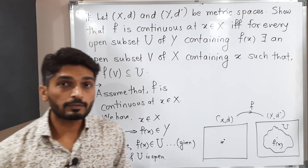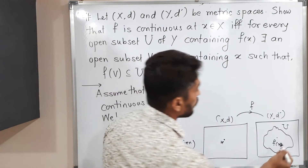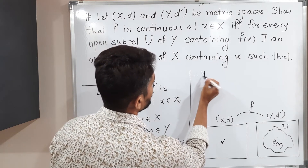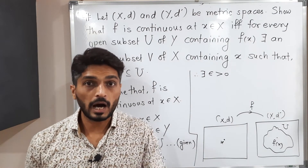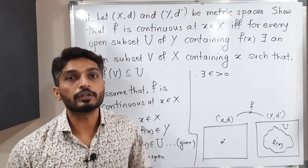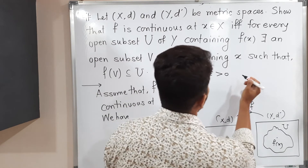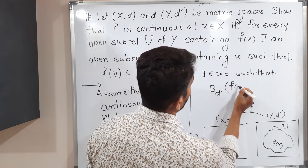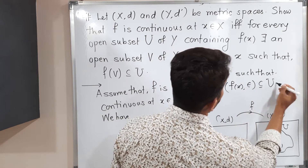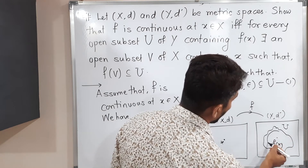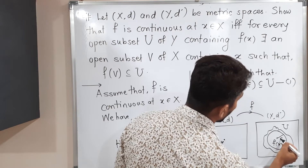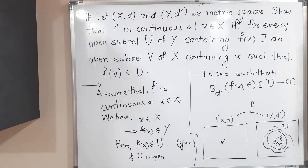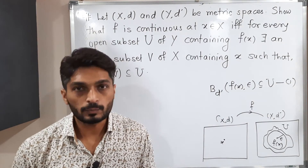By the definition of an open set, there exists a radius such that there will be an open ball containing f(x) which is a subset of U. Therefore, there exists epsilon greater than 0 — I am using epsilon rather than r since I will also use continuity — such that the open ball in (Y, d') with center f(x) and radius epsilon is a subset of U. I will call this statement (1).